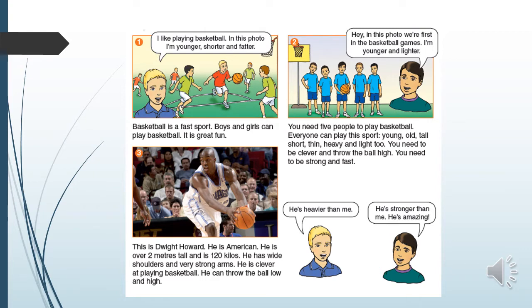You need to be clever and throw the ball high. You need to be strong and fast. Hey! In this photo, we're first in the basketball games. I'm younger and lighter. This is Dwight Howard. He is American. He is over two meters tall and is 120 kilos. He has wide shoulders and very strong arms. He is clever at playing basketball. He can throw the ball low and high. He's heavier than me. He's stronger than me. He's amazing.